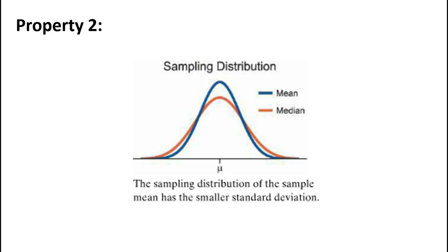Property two: a good estimator has a small standard deviation compared to other estimators. This tells us that the estimator tends to fall closer to the parameter than other estimates. For example, for estimating the center mu of a normal distribution, both the sample mean and sample median are unbiased, but the sample mean has a smaller standard deviation and is therefore a better estimator for mu.